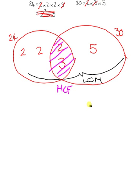And what we do is multiply them together. So the highest common factor for 24 and 30 is 2 multiplied by 3. And the lowest common multiple is 2 times 2 times 2 times 3 times 5.